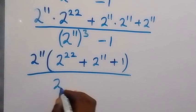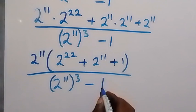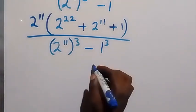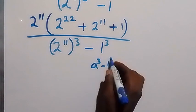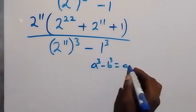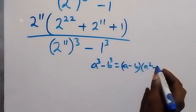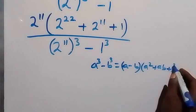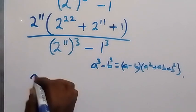Then divided by, from the denominator, we can write this as 2 raised to power 11 raised to power 3, minus 1 raised to power 3. Here we have an identity — difference of two cubes: a cubed minus b cubed equals a minus b, multiplied by a squared plus ab plus b squared. So when we apply that here in the denominator...